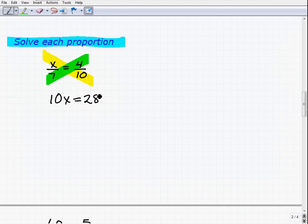Then we divide both sides of the equation by 10. So 28 divided by 10. Use your calculator, and you should get 2.8.